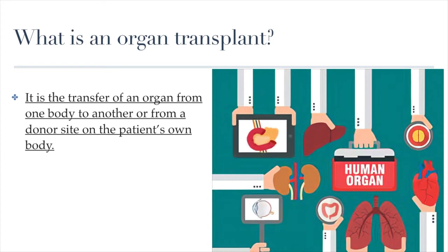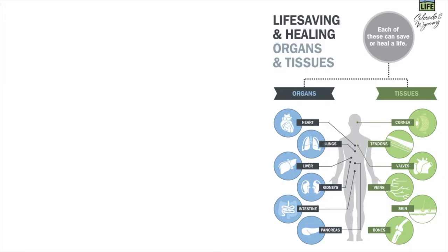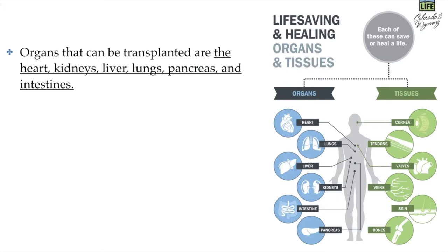We're going to be discussing some of the different types of transplants, and we're just going to see some of the benefits, drawbacks, and individual criteria for each of those. There are many types of organs that can be transplanted. Some of the more common ones are heart transplants, kidneys, liver, lungs, pancreas, intestines, but there can also be tissues that are transplanted.